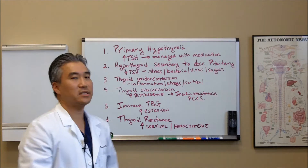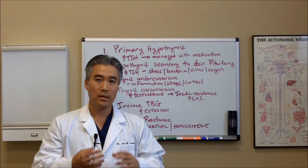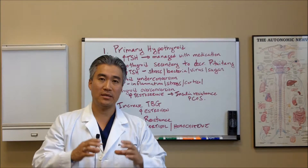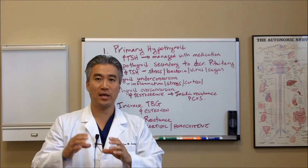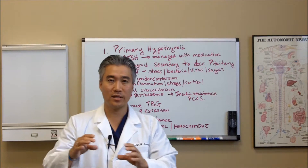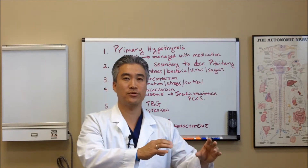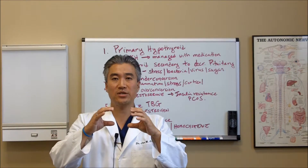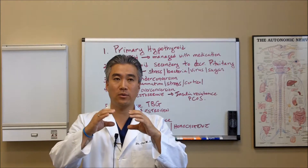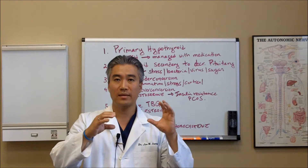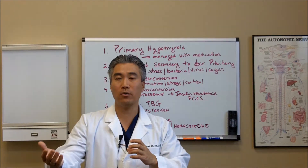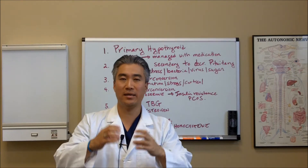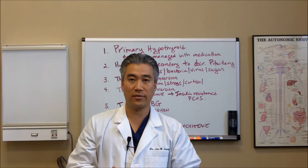Number five is an increase in thyroid binding globulin — a marker we can check in your blood. Thyroid binding globulin acts like a taxi cab that takes your thyroid hormone from the gland to all the receptors and cells. An excessive elevation of thyroid binding globulin means there are too many taxis — they take all the thyroid hormones in but never let them out. The hormones remain bound and are not released to the cells. Therefore, you may have an under-functioning thyroid even though your gland is producing hormone.